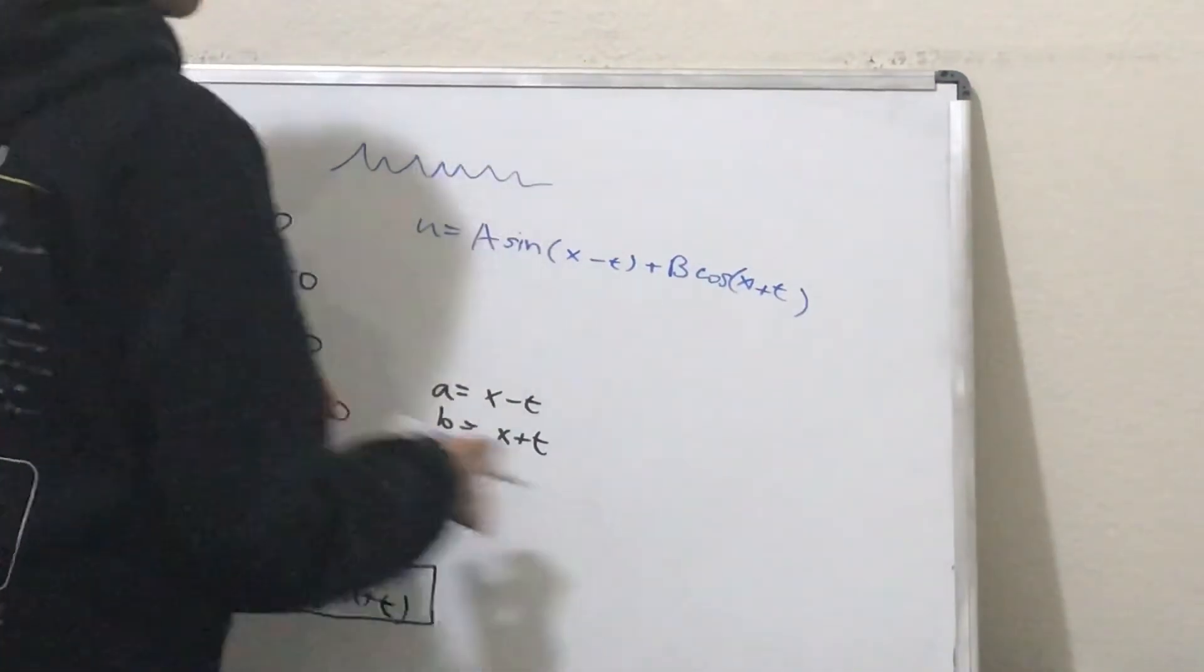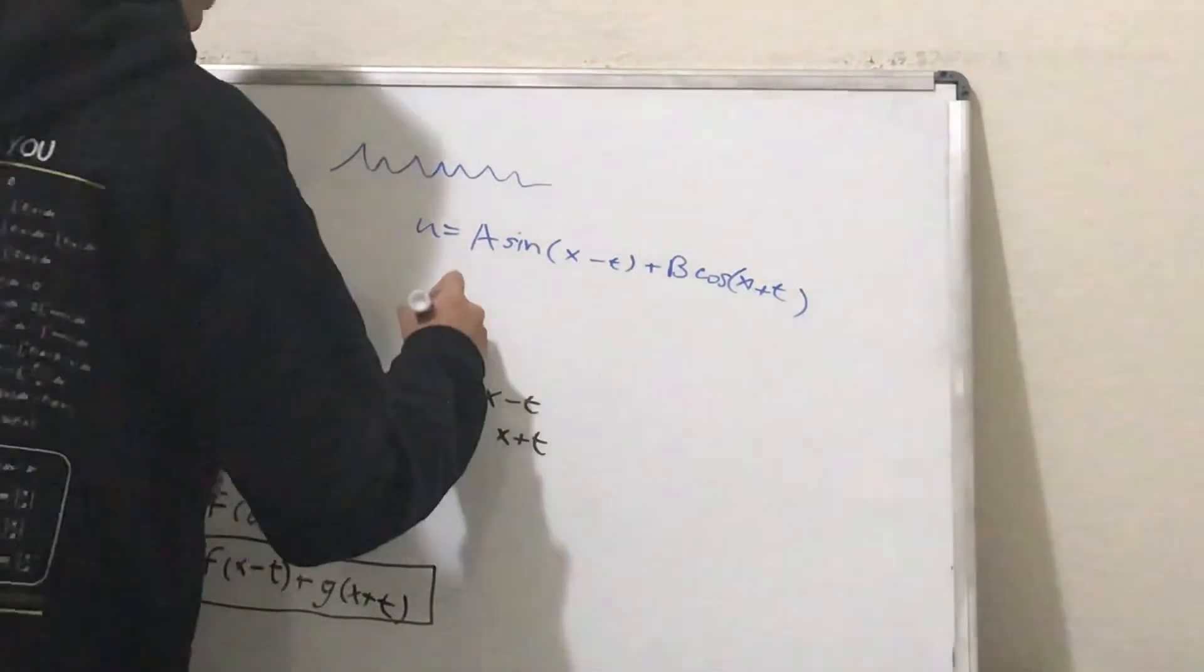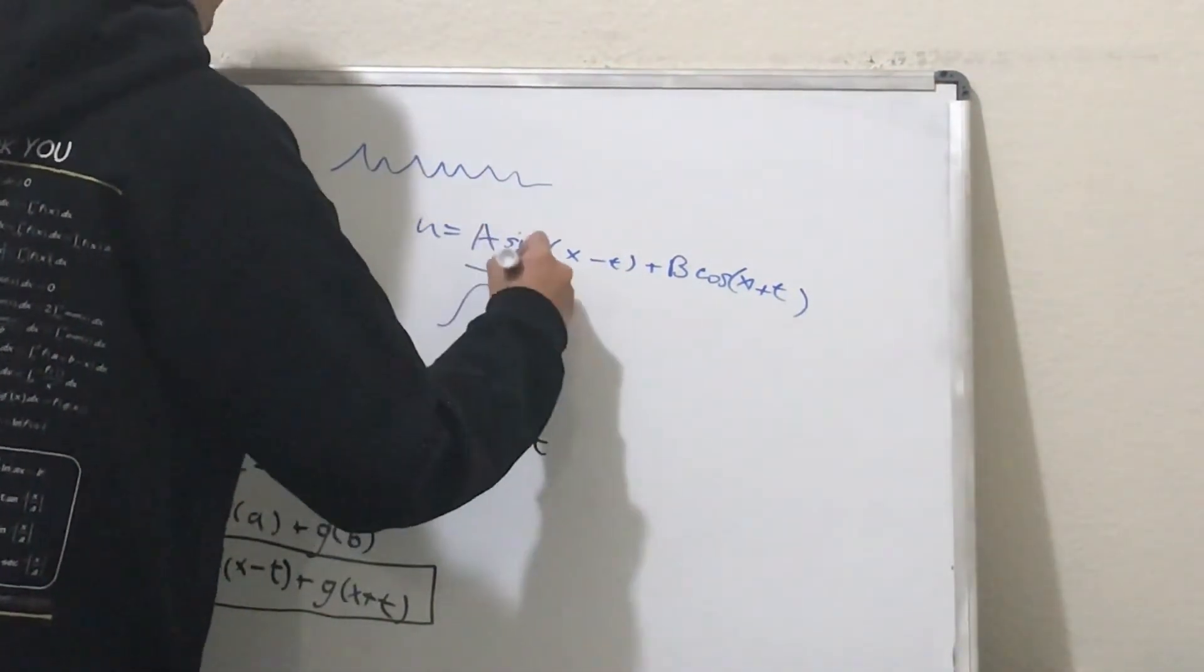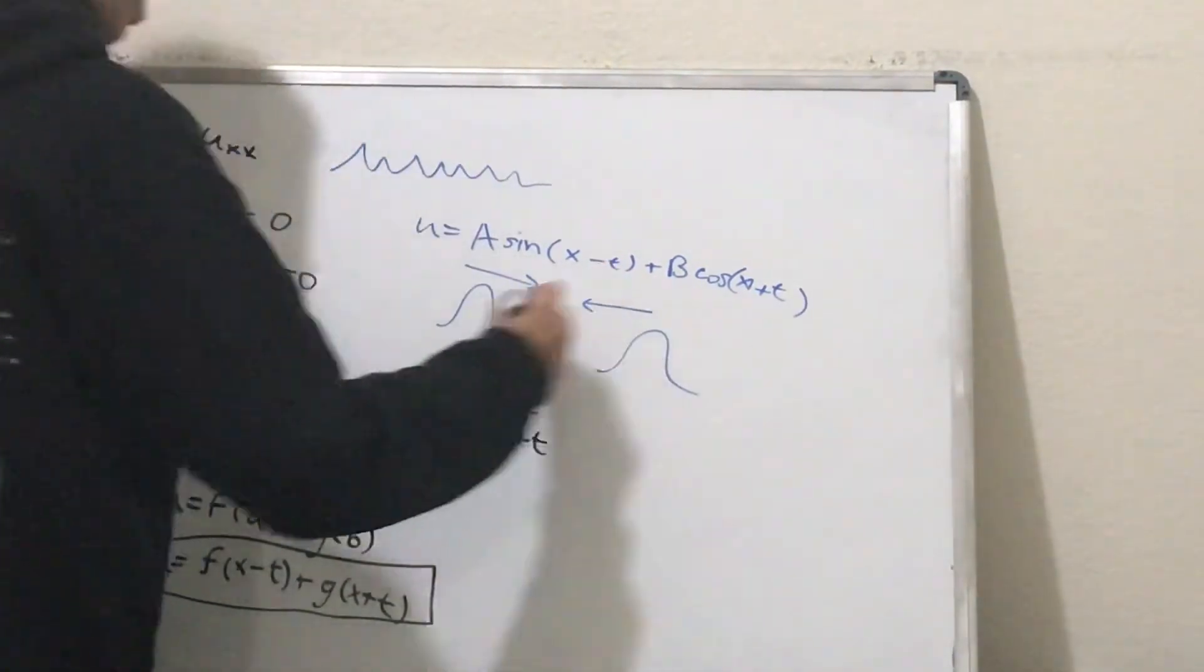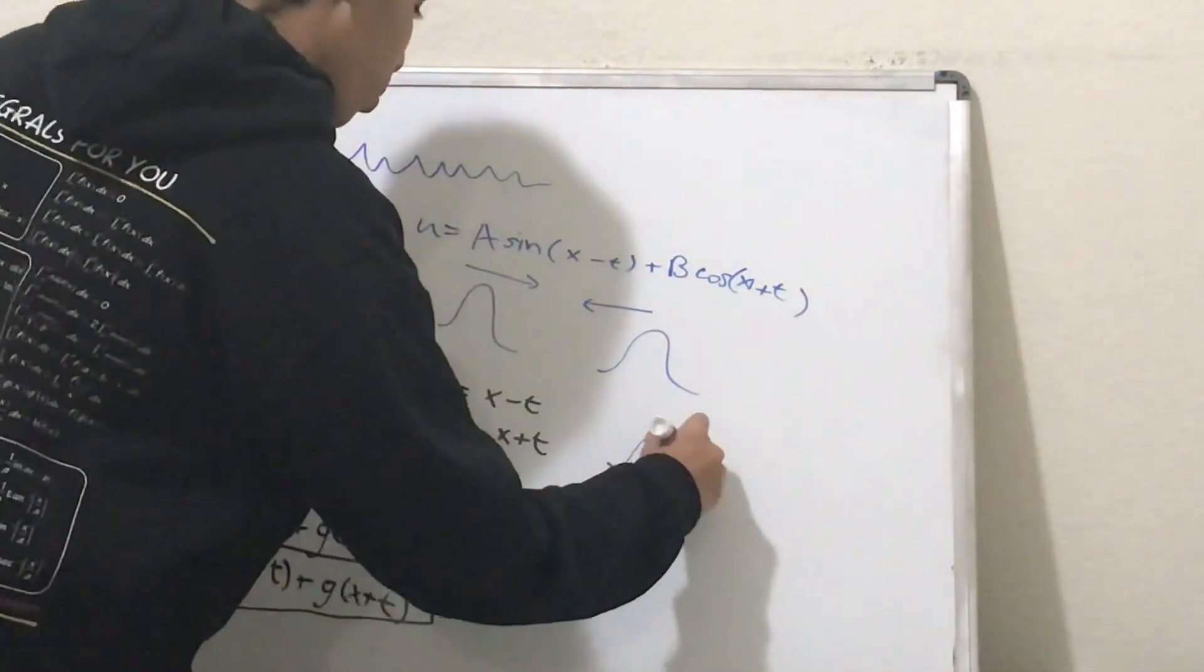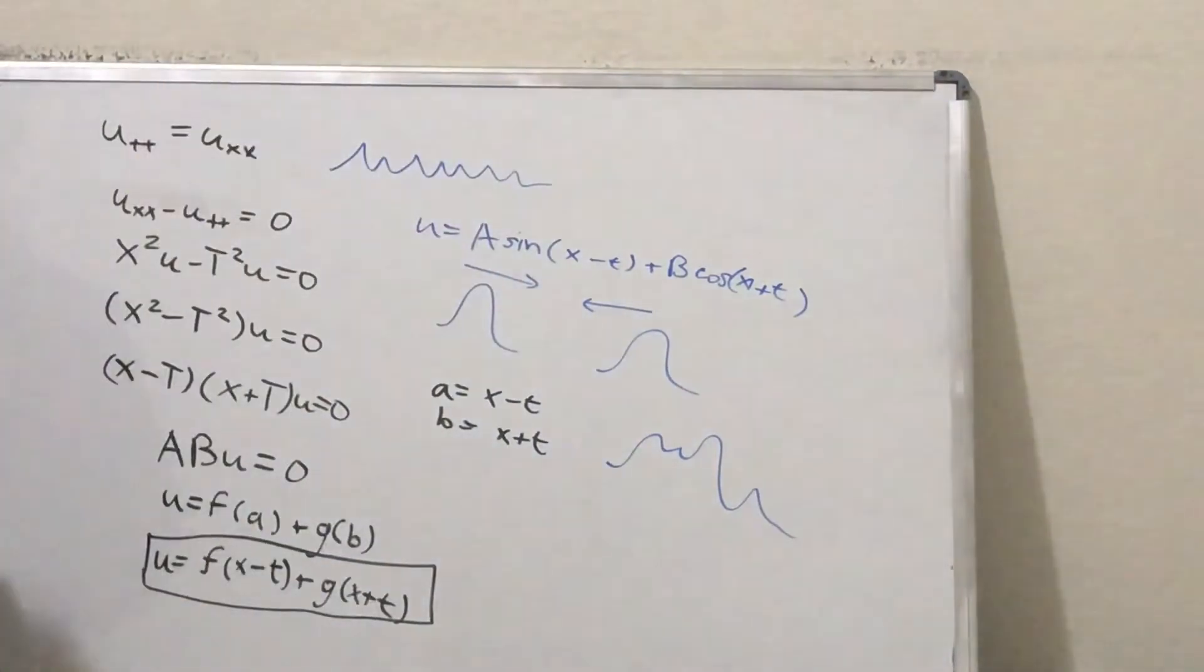And what this basically means is you're having a superposition of left traveling waves and right traveling waves. And you're basically adding them up to get weird looking waves right here.